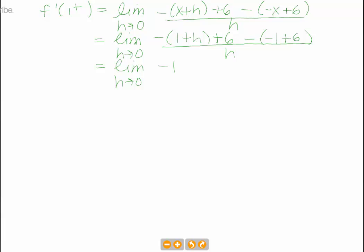So now I have negative 1 minus h plus 6, minus 5, all over h. So again, if I subtract 6 by 1, I'm going to get 5, those are going to cancel, minus 5. So I'm just going to get negative h over h, which is just simply negative 1. So that implies that f prime of 1 from the right is going to be negative 1.